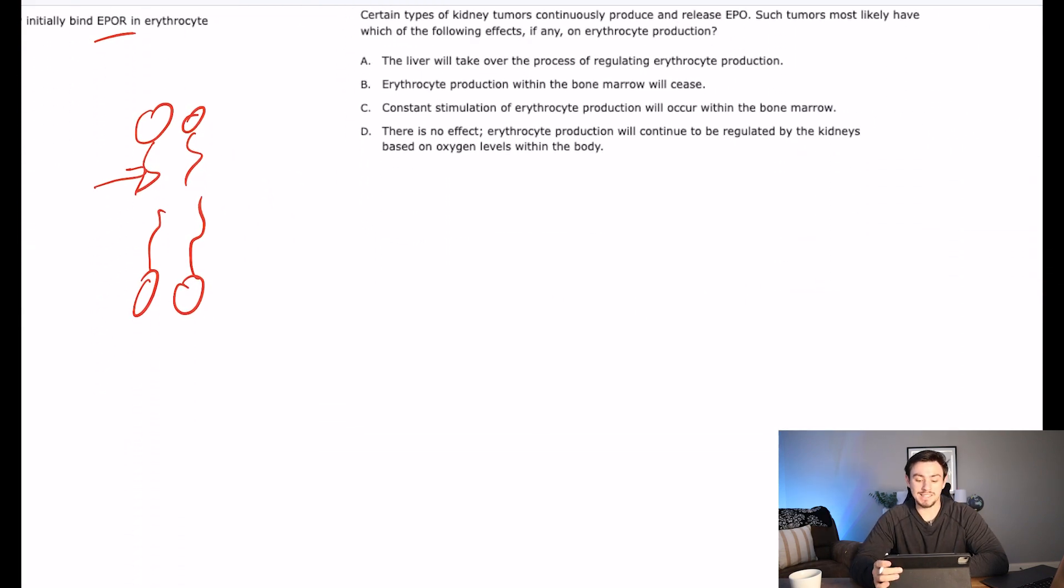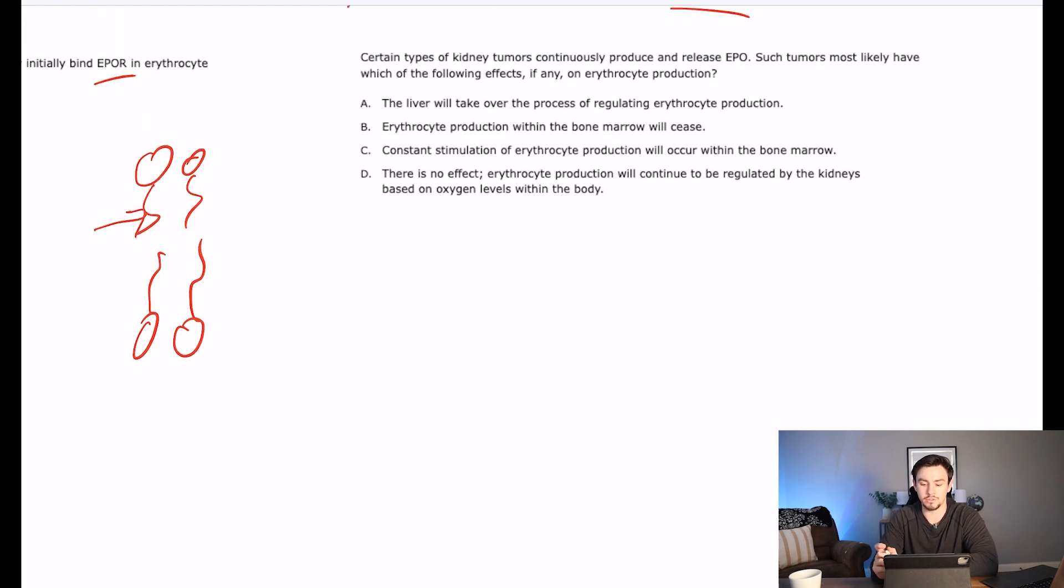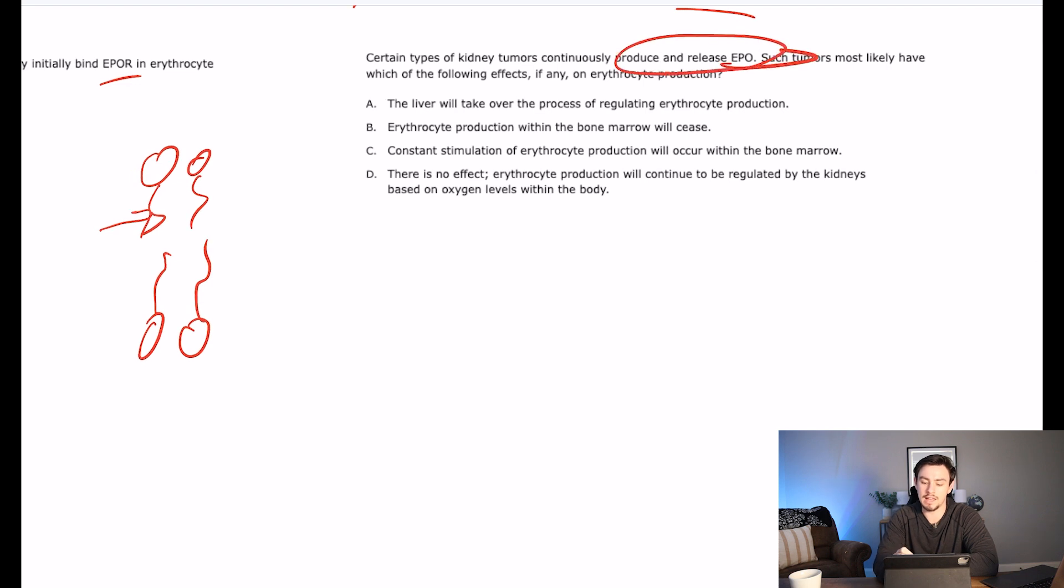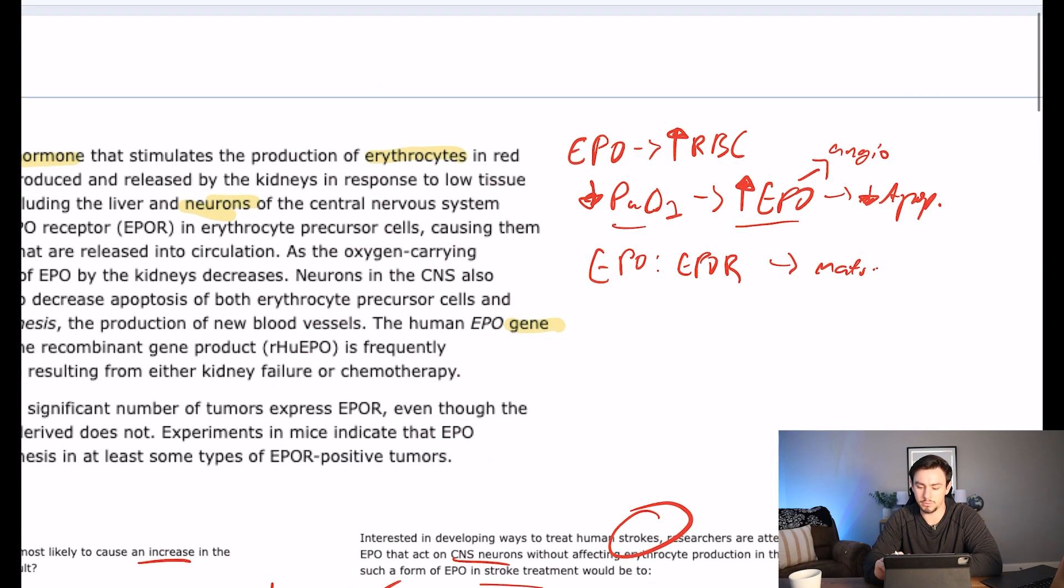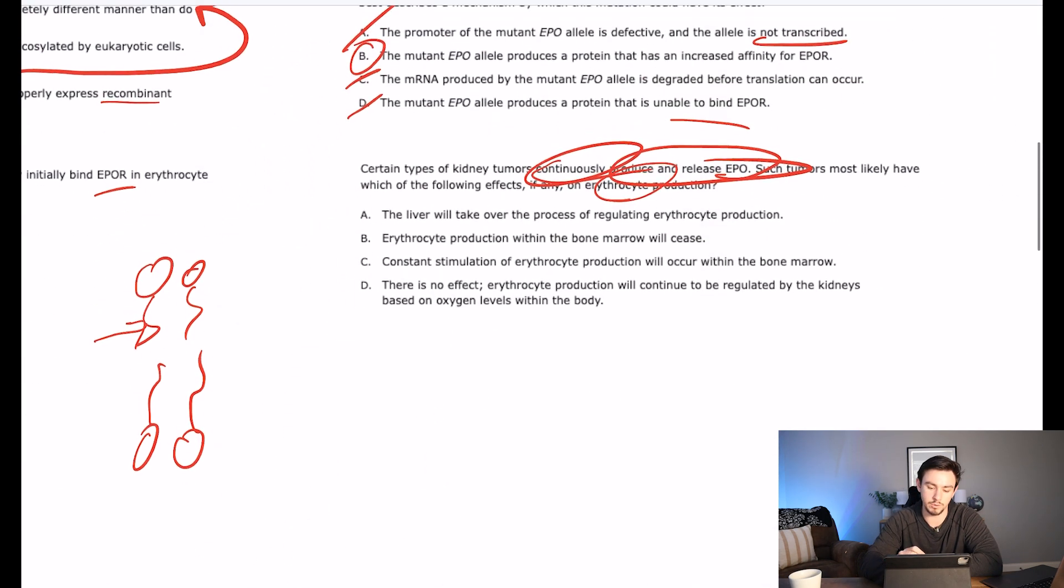Certain types of kidney tumors continuously produce and release EPO. Such tumors most likely have which of the following effects, if any, on erythrocyte production. So this is pretty much asking about our flow chart. It's saying if we have like constant production of erythropoietin, what's going to happen to our red blood cells? Well, we go back to our flow chart, it says that whenever we have erythropoietin, we get increased red blood cells. So let's check that out.